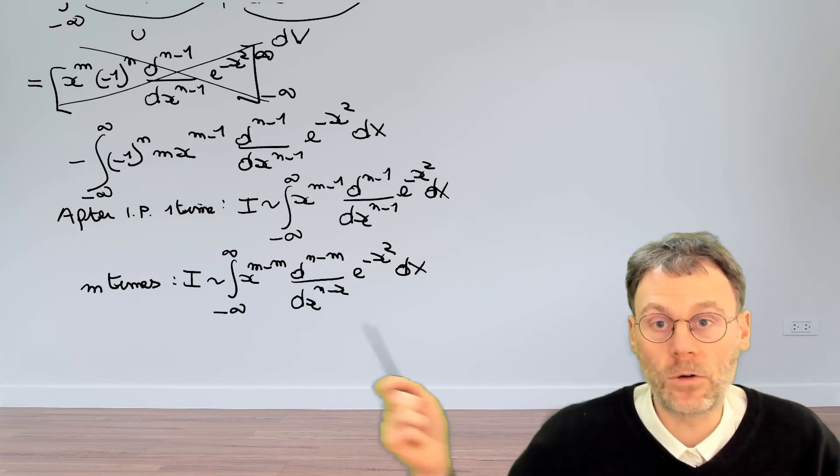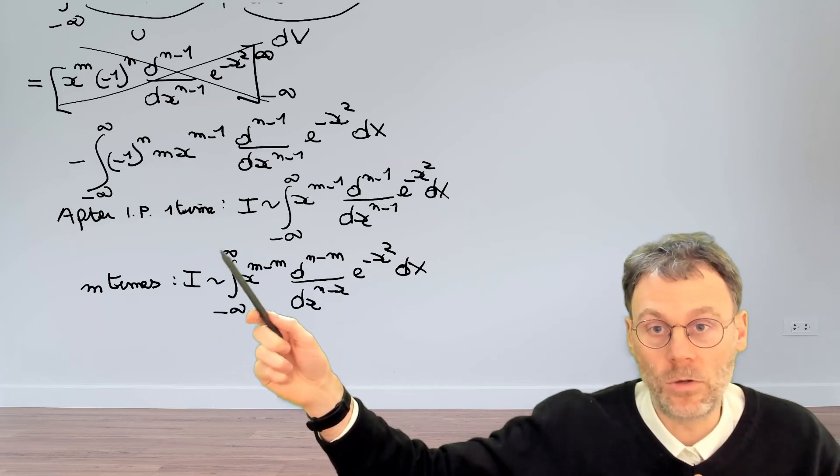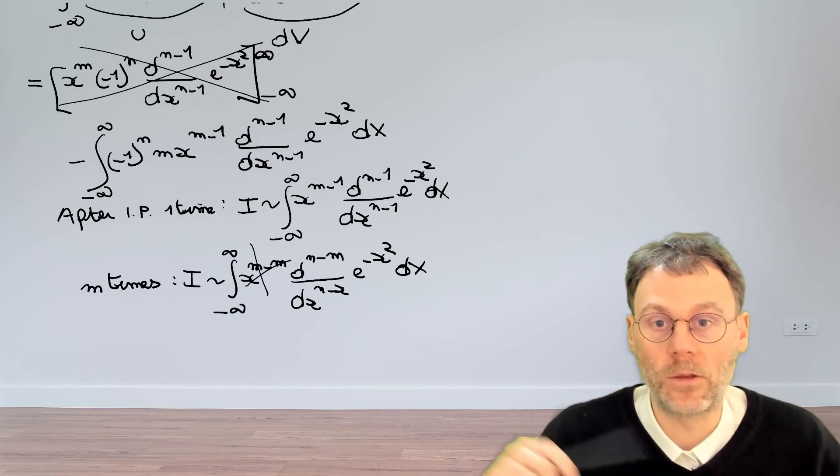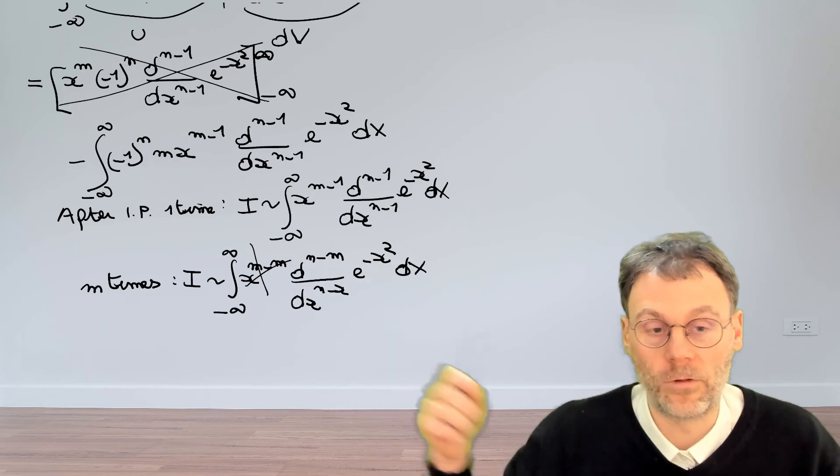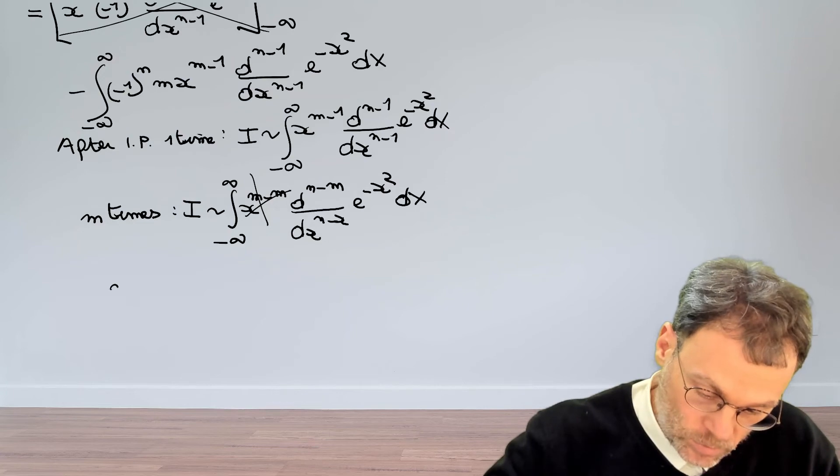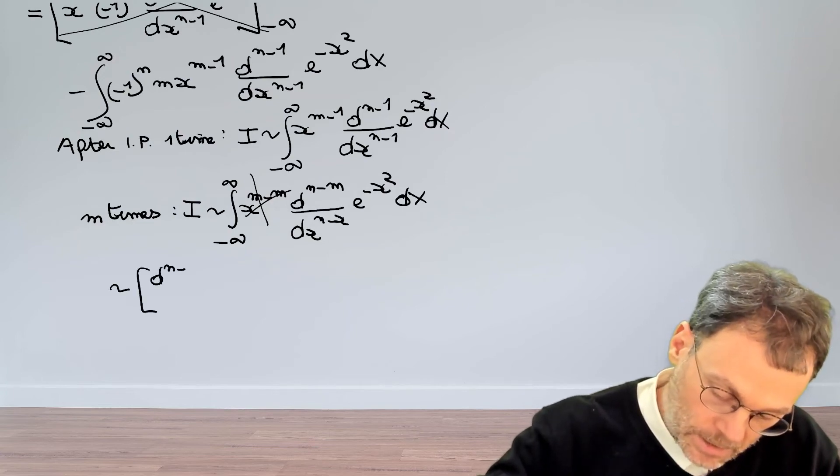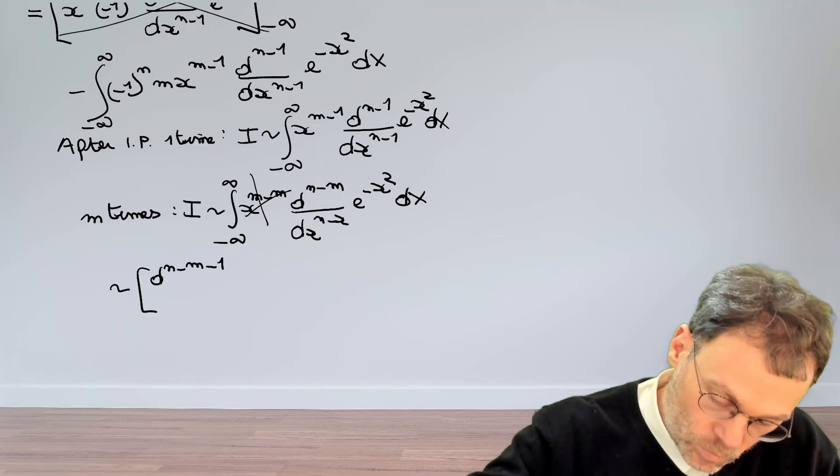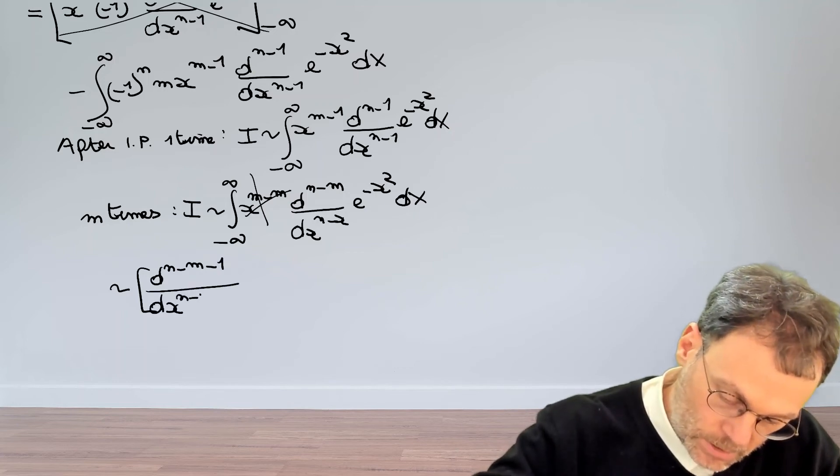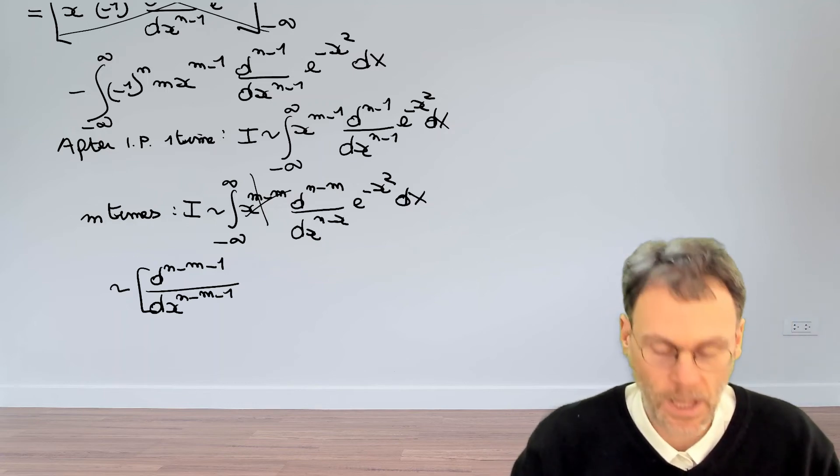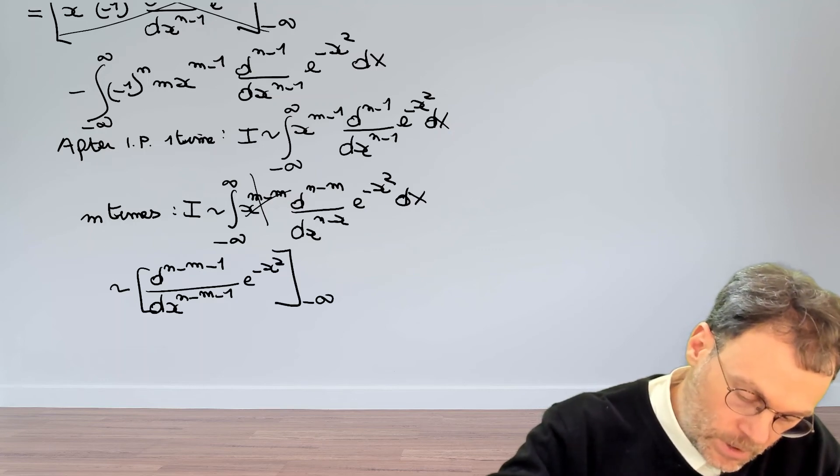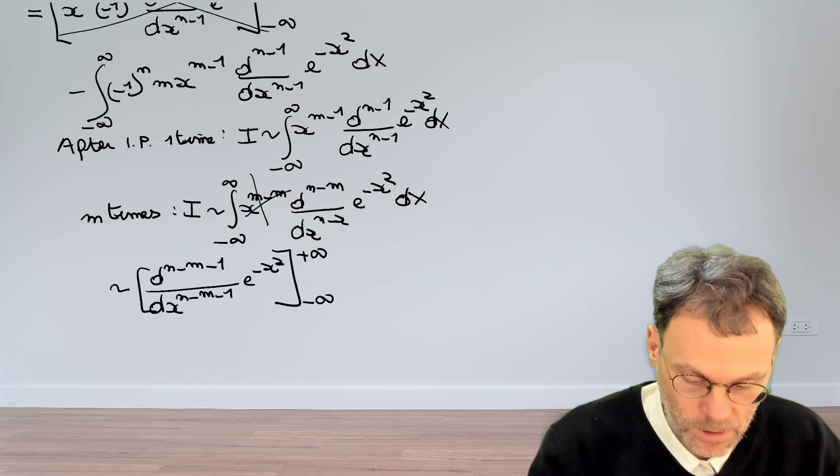And that's an important milestone because after m times, you notice that we have here x to the power of zero. So now this thing drops out and we only have the integral of a derivative here. That's, of course, very simple to calculate. That's going to become here d n minus m minus 1, so we reduce the order of the derivative minus 1. So n minus m minus 1 of our exponential evaluated between minus infinity and plus infinity. This should be an m, obviously.